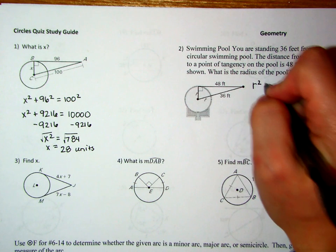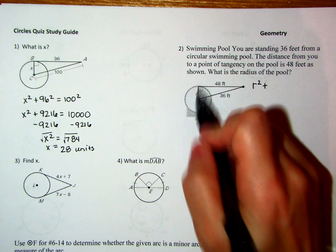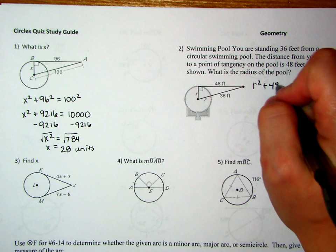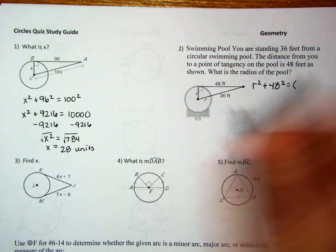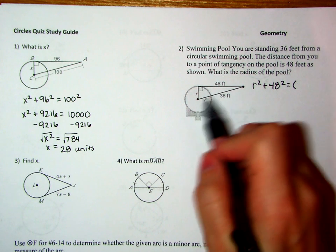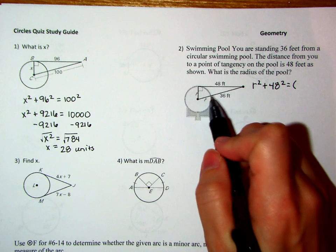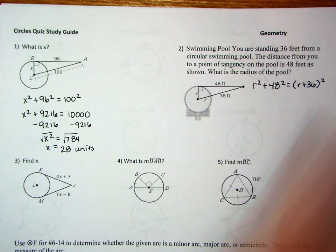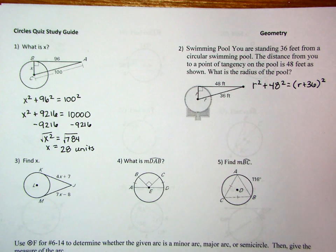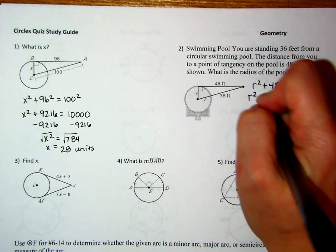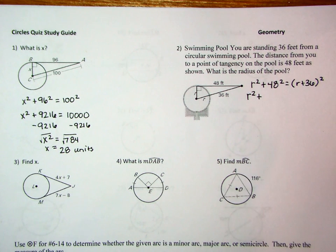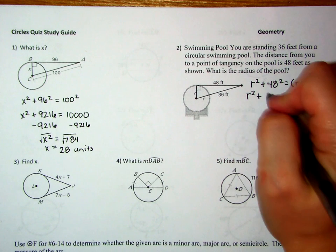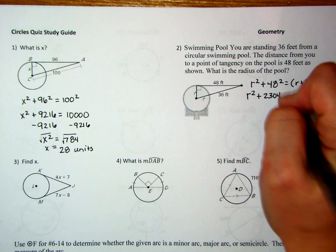So it's going to be leg squared plus, so that's that leg squared plus the other leg squared, is equal to the hypotenuse squared. Now notice the hypotenuse is this whole thing. It's the r plus the 36. So that whole hypotenuse needs to be in a parentheses squared. Now we clean this up. So we have r squared plus, we'll use our calculator to do 48 squared, which is 2304, equals.